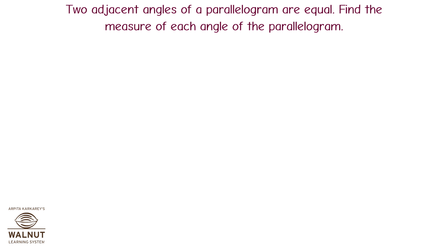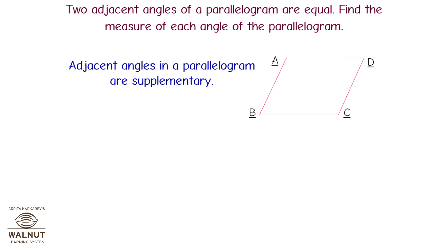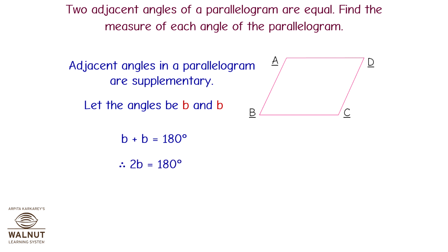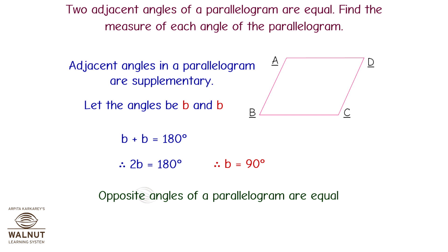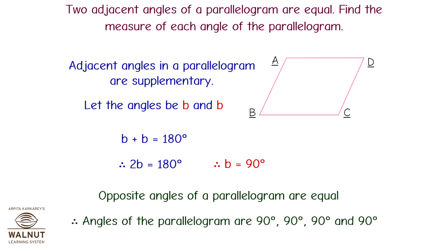Two adjacent angles of a parallelogram are equal. Find the measure of each angle. Adjacent angles in a parallelogram are supplementary. Let both angles be b. Then b + b = 180°, so 2b = 180°, giving b = 90°. Since opposite angles are equal, all angles of the parallelogram are 90°.